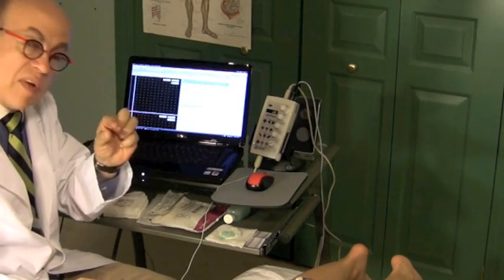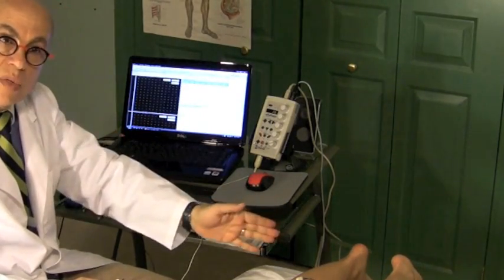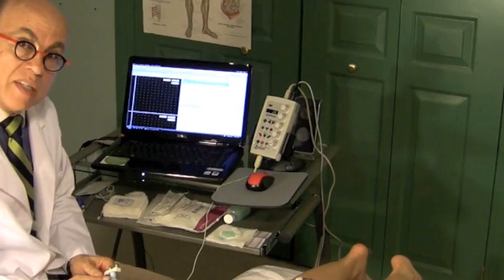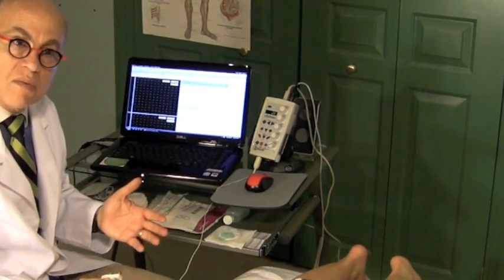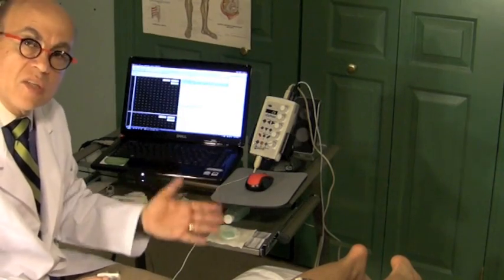The second difference is that the F wave is very small. The H reflex, as you will see, is very big. It'll be much easier to identify. And finally, if you have one nice or two nice H reflexes, you don't need to get 10.